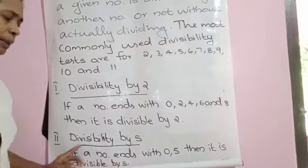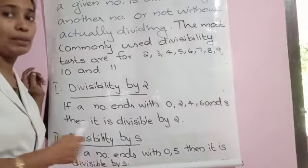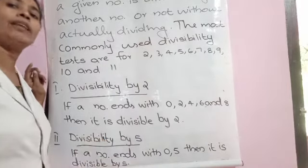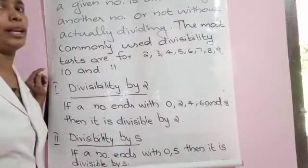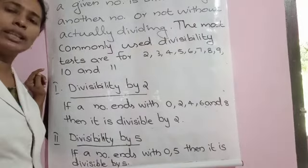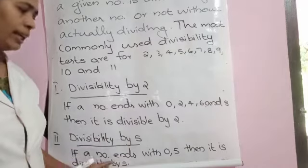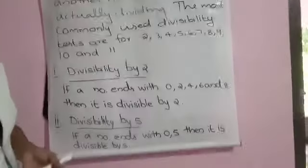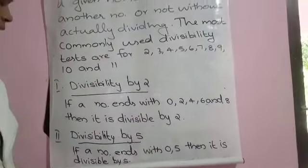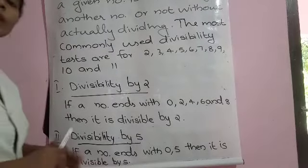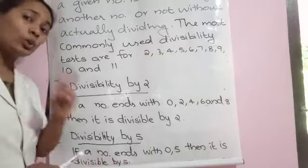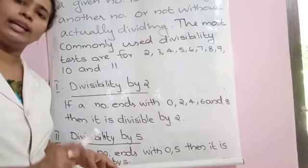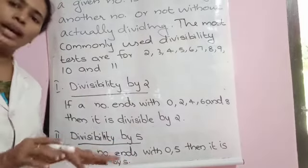Let us move to divisibility by 5. Suppose a large number is given to you — how do you say whether it is completely divisible by 5 without actual division? Look at the ending digit. If the given number ends with 0 or 5, we can say that the given number is completely divisible by 5. Without dividing, we can say the given number is divisible by 5.